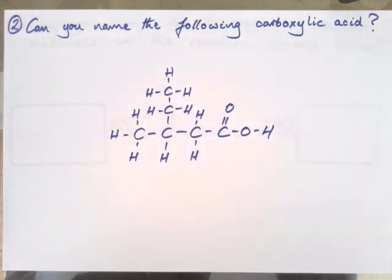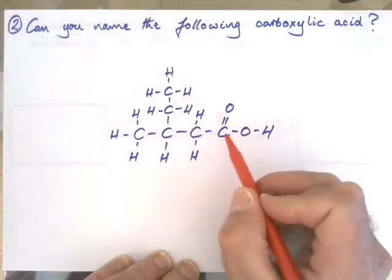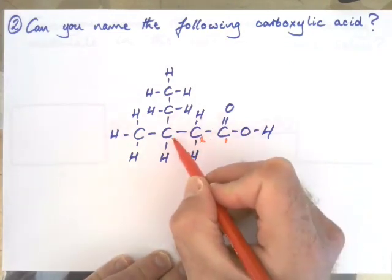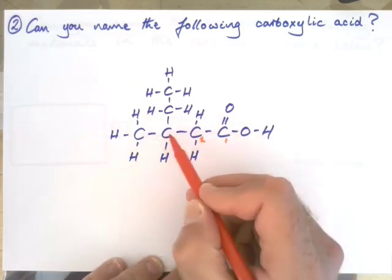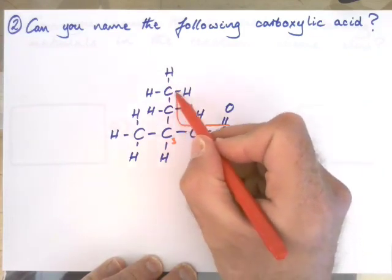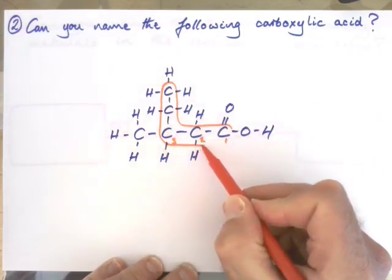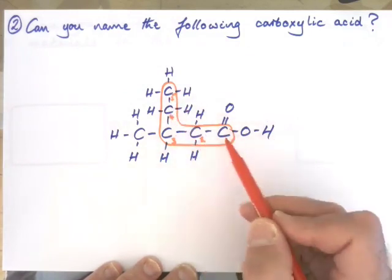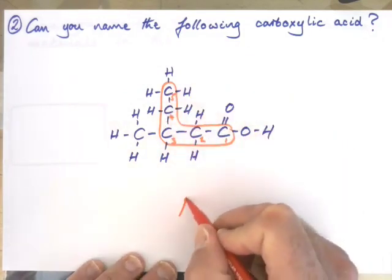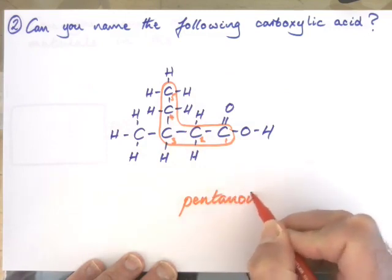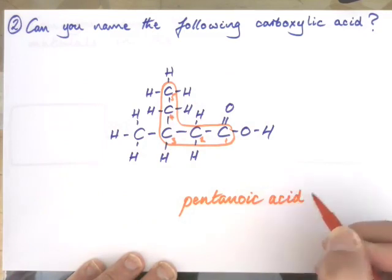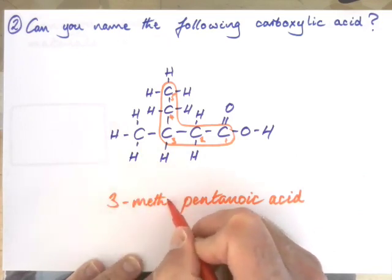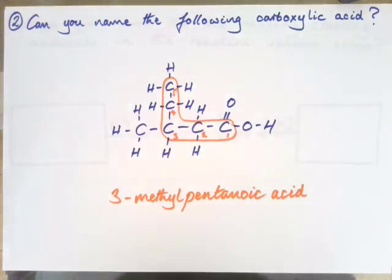When naming a carboxylic acid, carbon number one is always the one where the acid group is. So that's carbon one, carbon two, carbon three. Now, do we go to carbon four or go up? We follow the longest chain — so we need to go up. Carbon four, carbon five. One, two, three, four, five — that's pentanoic acid. And we have a methyl group at carbon number three, so the name is 3-methylpentanoic acid.